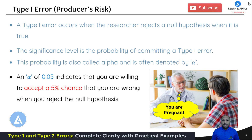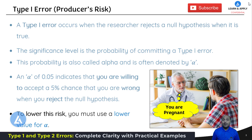To lower the type 1 error, we can lower the value of alpha. To lower this risk, you must use a lower value of alpha.